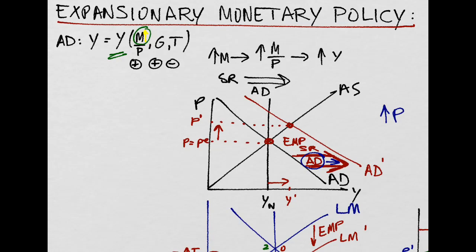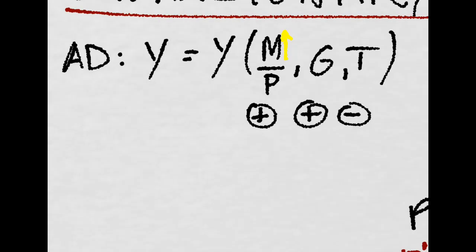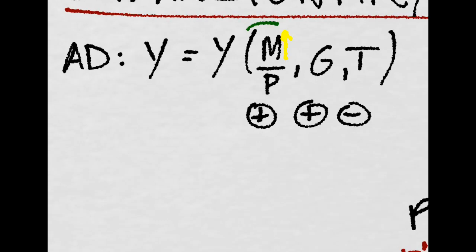Let's use our new model to see what's going to happen in the medium run when the government implements an expansionary monetary policy. That is, if the government increases the money supply in the economy.